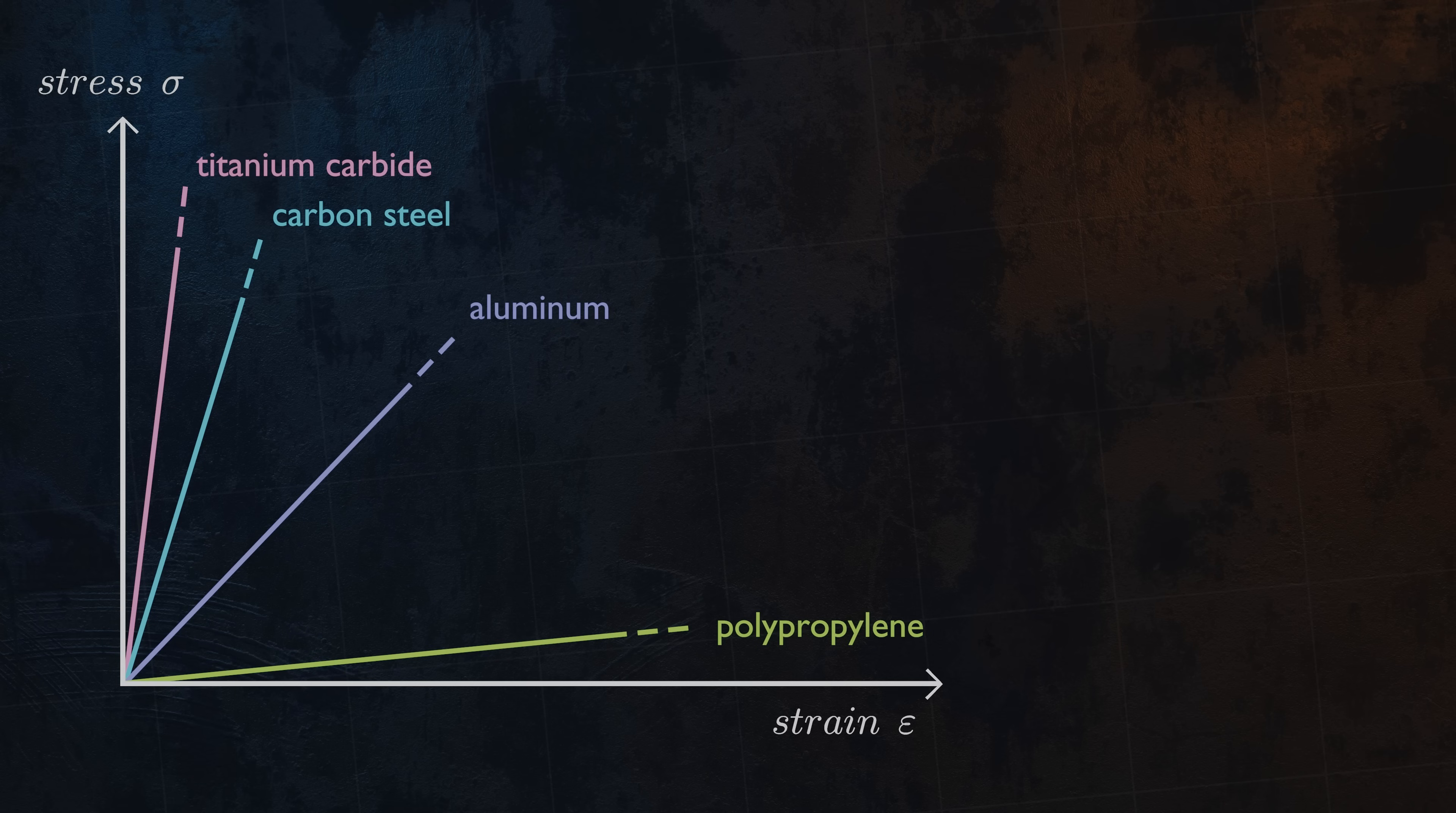For anisotropic materials like wood or composites such as carbon fiber, the value of Young's modulus will depend on the direction in which the load is applied.